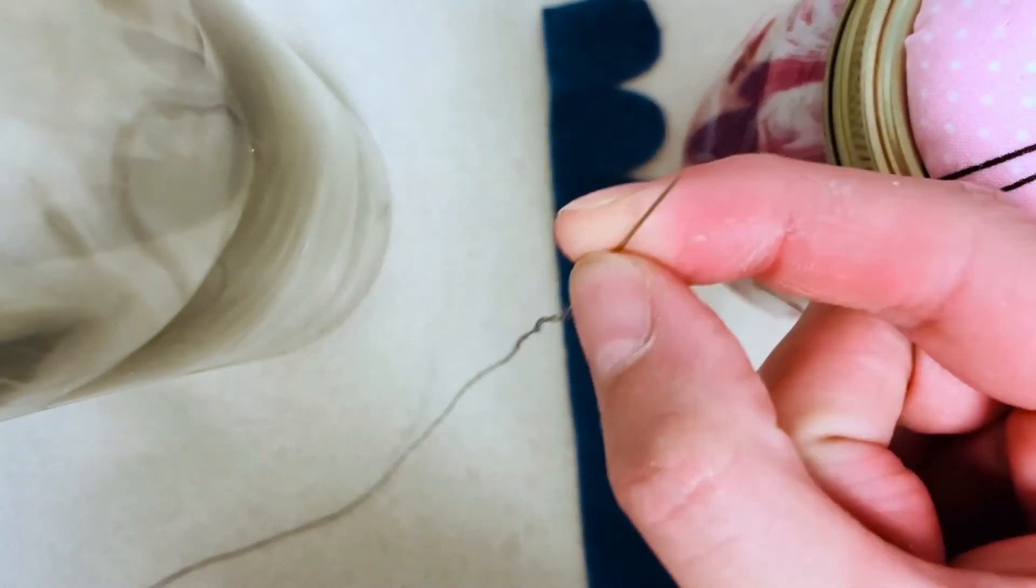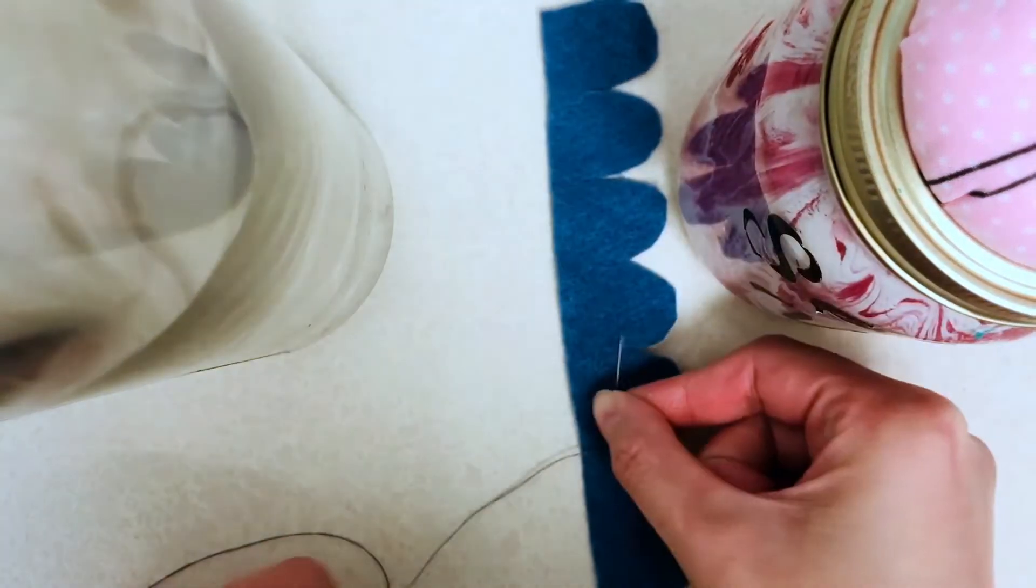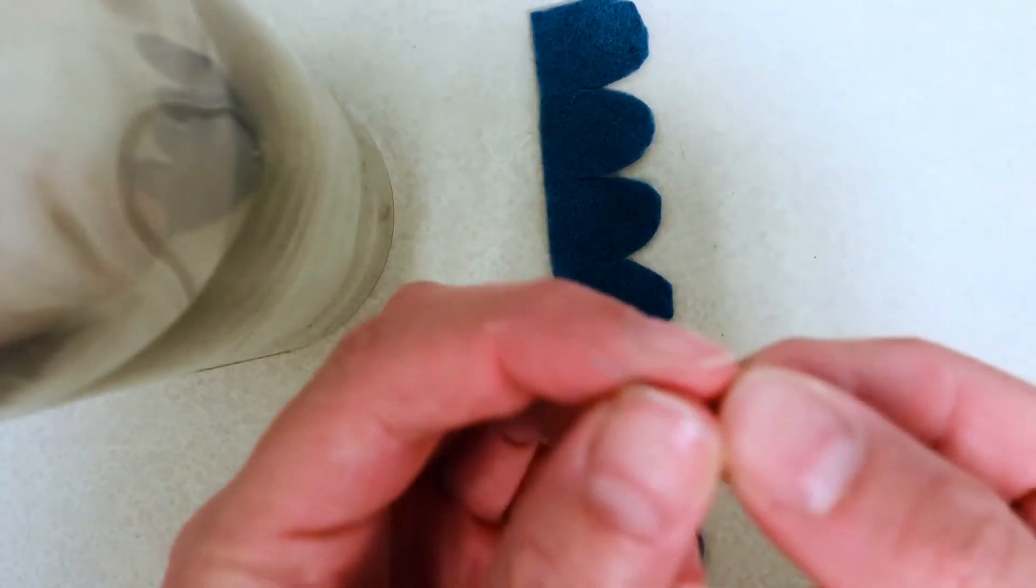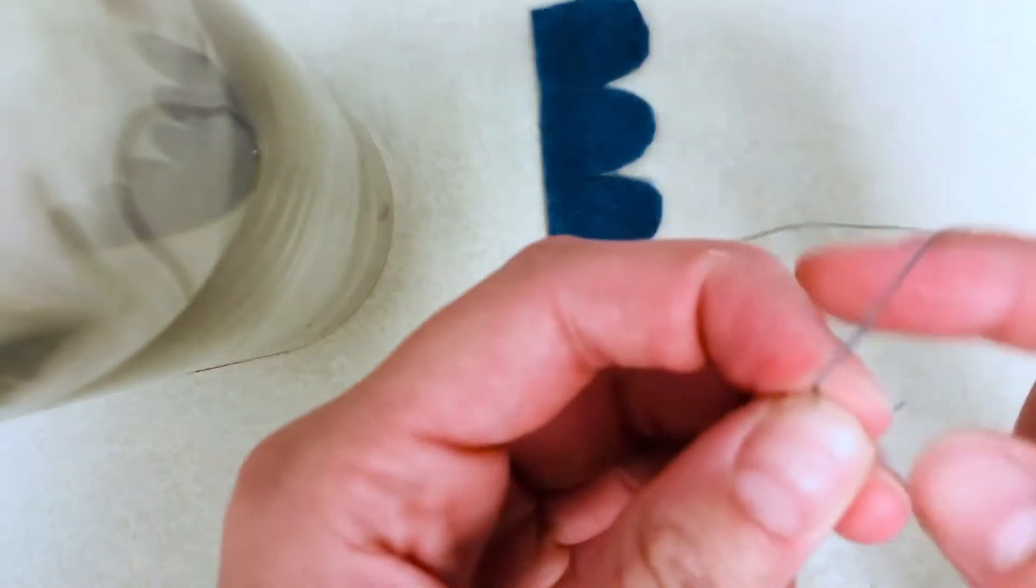Now here's where you're going to start the sewing portion of the project. After threading your needle you're going to want to tie a small knot at the very end with some additional thread that's going to hang off the back. This will make the pulling and tying at the very end a lot easier.